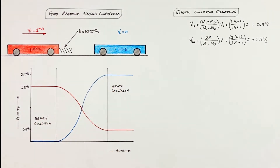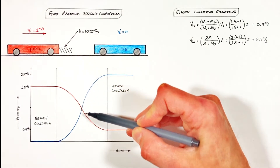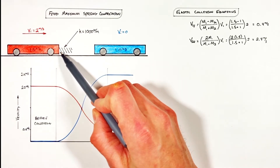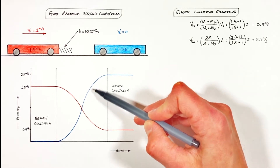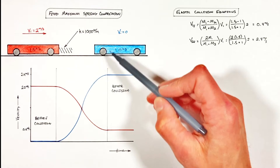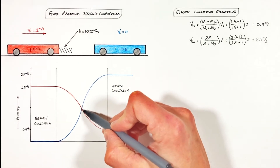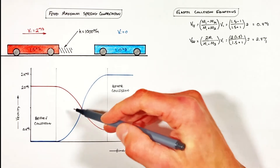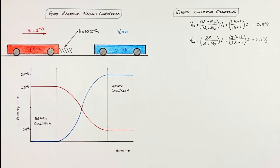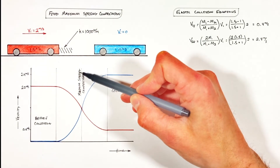As these two carts collide, there's a period of time during which the red cart is moving faster than the blue cart, and that means the spring is compressing. After a certain amount of time the blue cart will have sped up and the red cart will have slowed down to a point where the blue cart is moving forward faster than the red cart — at that point the spring is relaxing. So it's the point in time where the two velocities are the same that represents when the spring is at its maximum compression.